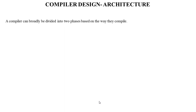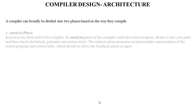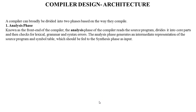A compiler can broadly be divided into two phases based on the way they compile. The first phase is the analysis phase and the second is the synthesis phase. The analysis phase is also known as the front end of the compiler. It reads the source program, divides it into core parts, and then checks for lexical, grammar, and syntax errors. It generates an intermediate representation of the source program and a symbol table, which are fed to the synthesis phase as input.